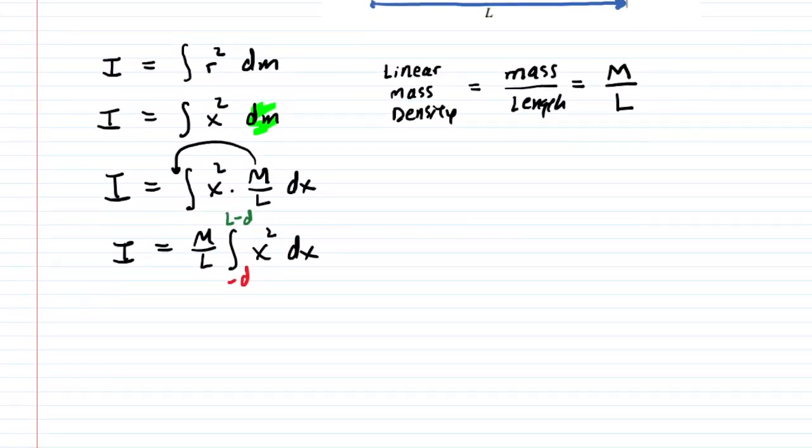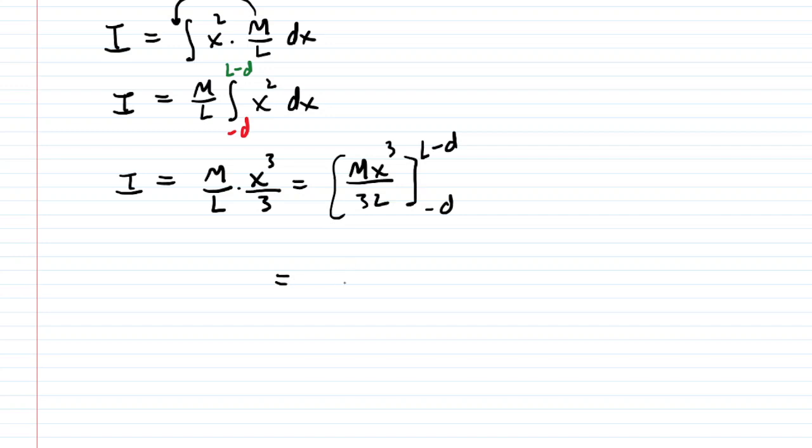We are now ready to integrate. This is a relatively simple integral. We can do a nice power rule by which we add 1 to the exponent to make it x-cubed and then divide by that new power. If we simplify that a little bit, we're just going to have mx-cubed over 3l. And this is bounded from a lower bound of negative d to an upper bound of l minus d. So now we just have to plug in our bounds. We can keep the m over 3l factored out. We always plug in our upper bound first. So that's l minus d cubed. And then we subtract what we have when plugging in the lower bound. So that's going to be negative d cubed.